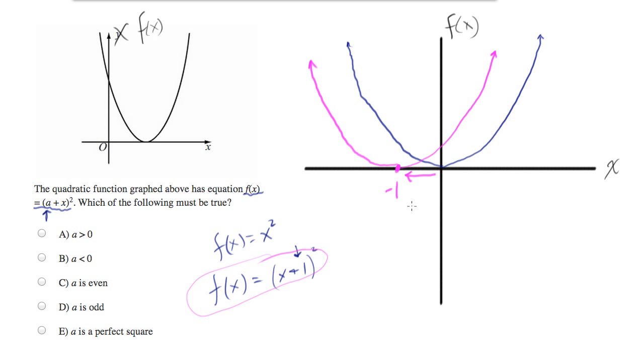So adding things directly to the variable has the effect of shifting the parabola, and it shifts the parabola opposite the direction from what you've added. So we added a positive 1 and it moved the parabola to the left.